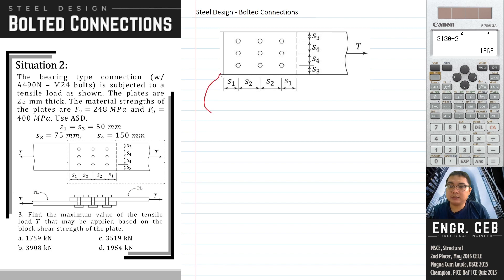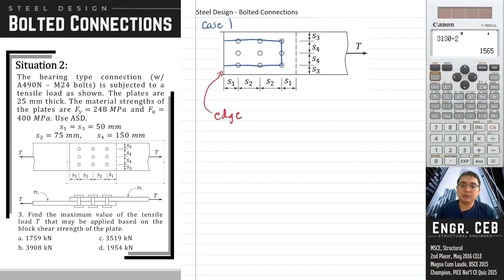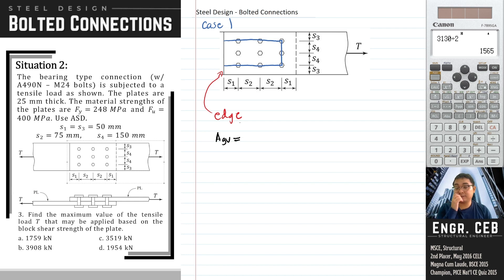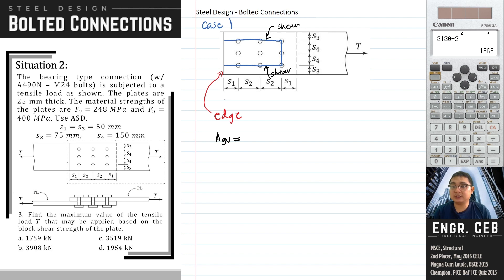This is the edge of the upper plate. One case of block shear path is case one. In solving for the block shear, we need to solve three areas. First is the gross area in shear, AGV — that is the area parallel to the direction of the load. So these are the shear areas, and we solve for the dimension: S1 plus 2S2 to get the total dimension.